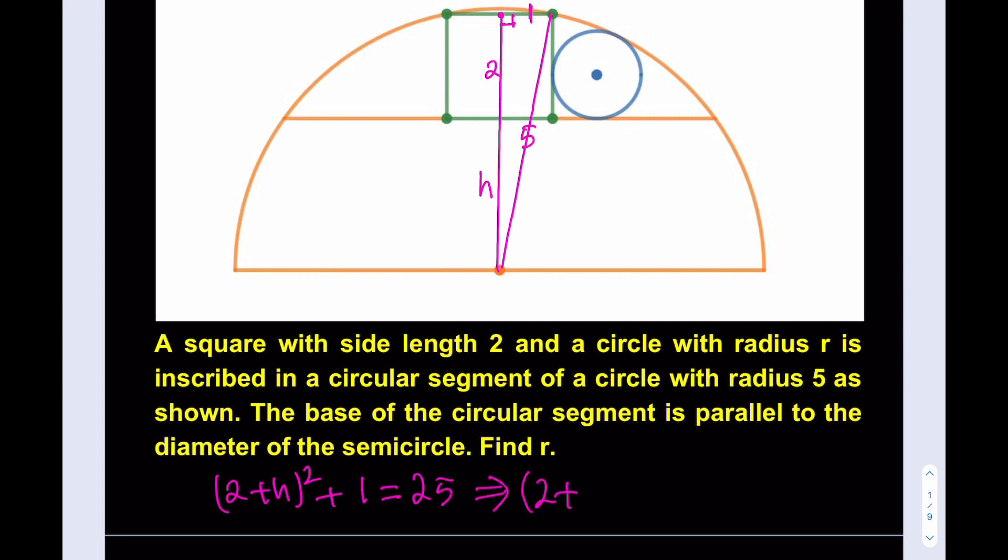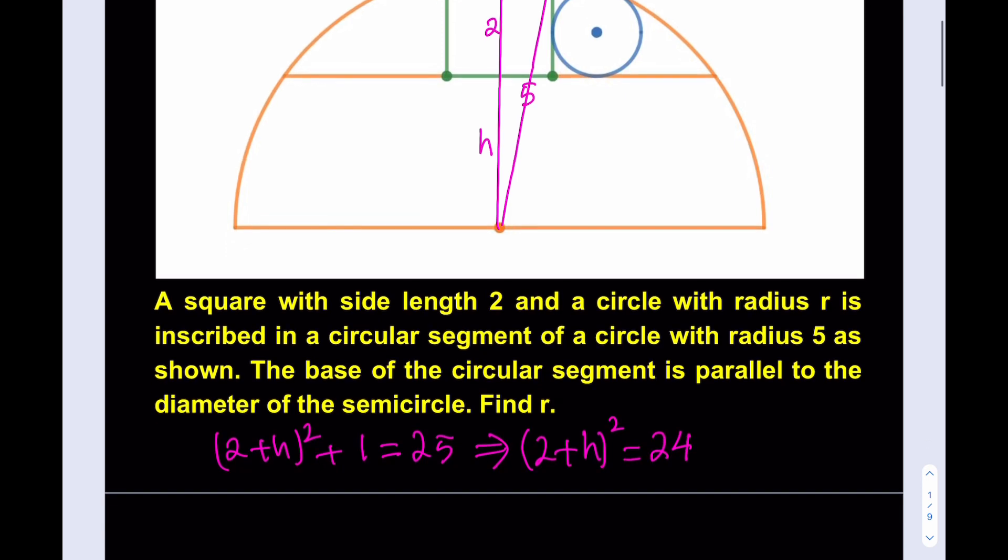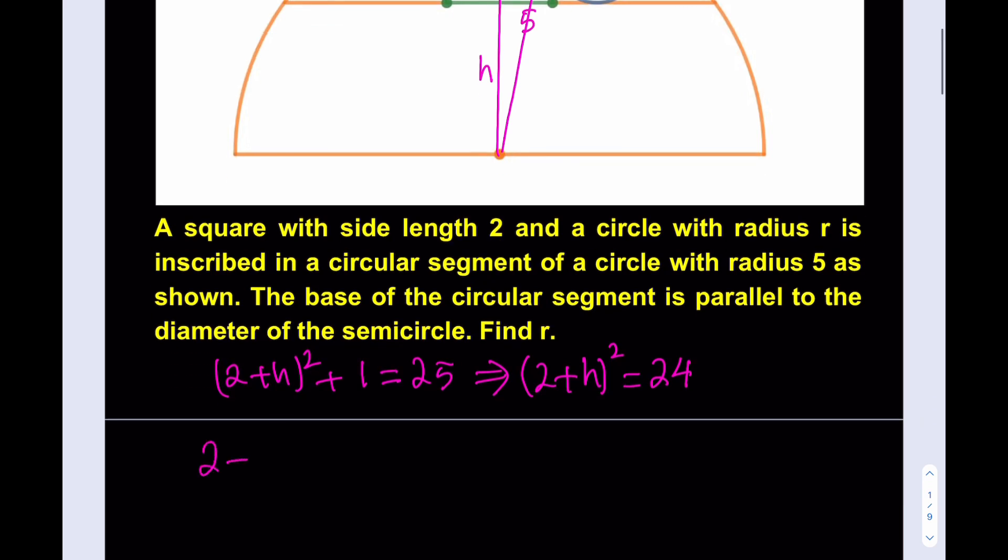Now you don't have to expand this because this is a perfect square, which is perfect, and I can just directly solve it. Let's go ahead and solve this one and then we'll come back and make other connections. So this gives me (2+h)² = 24, so if I square root both sides, obviously I'm going to go with the positive solution, so that's going to be 2√6, and from here h happens to be 2√6 - 2. Awesome.